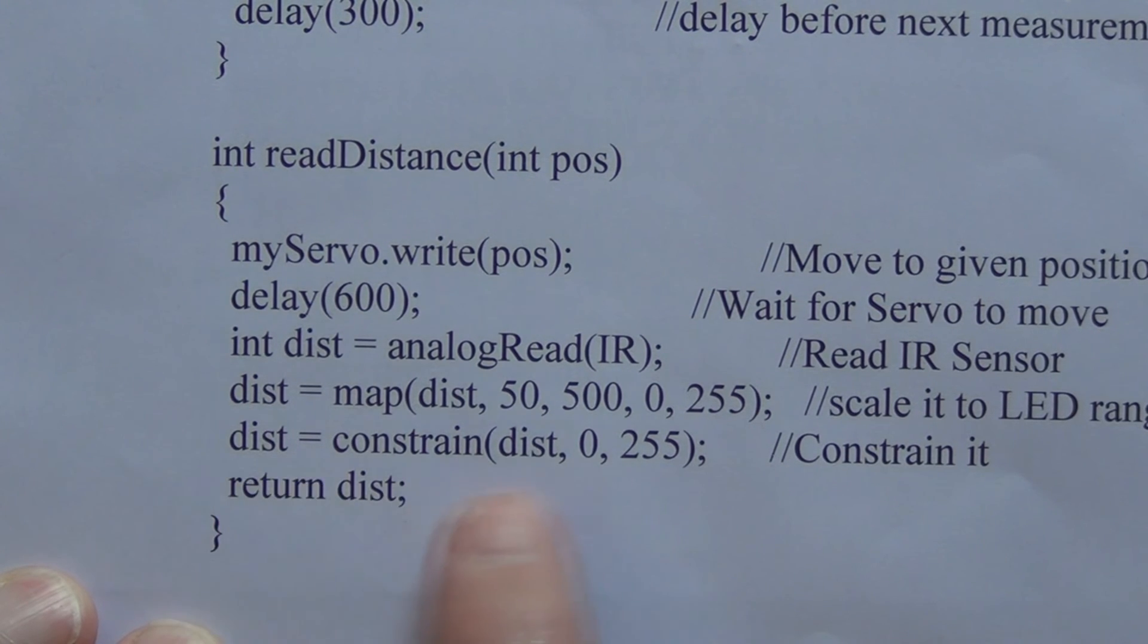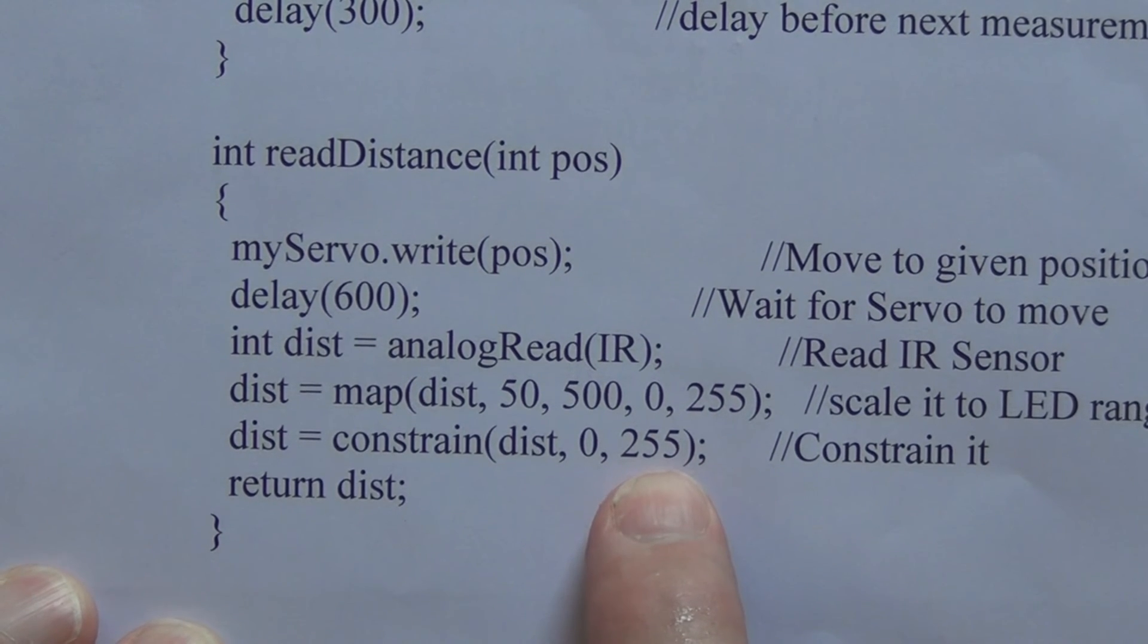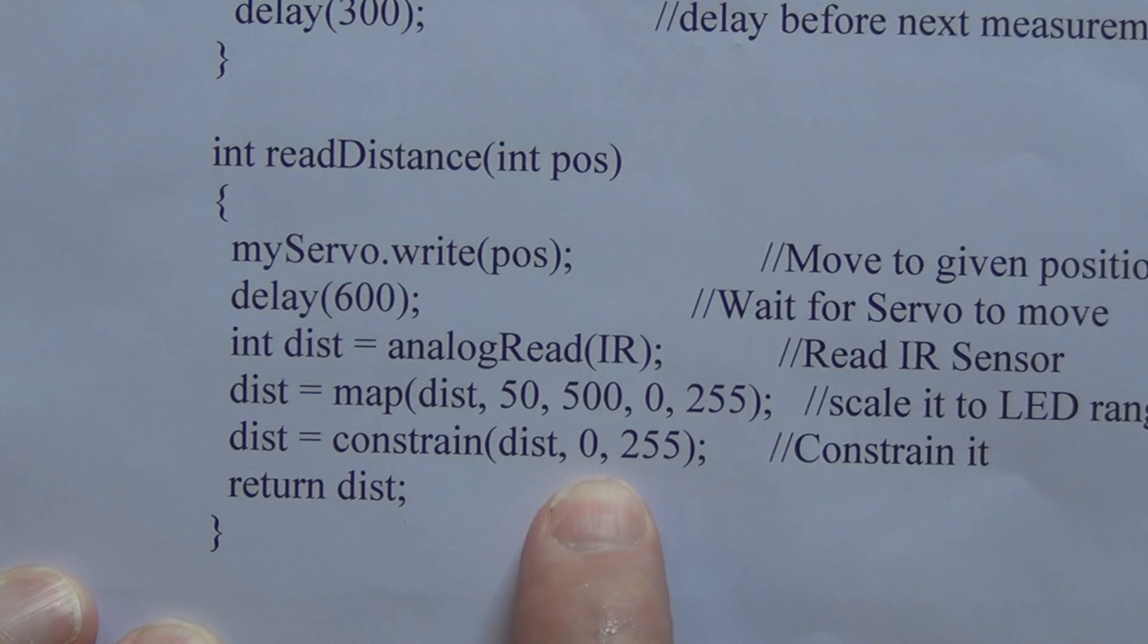And here this is what we are using to light the LED, to control the pulse width modulation. So we don't want them to be too bright, so we are constraining the pulse width modulation output from 0 to 255.